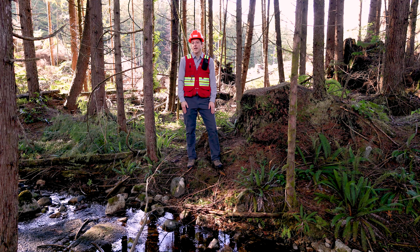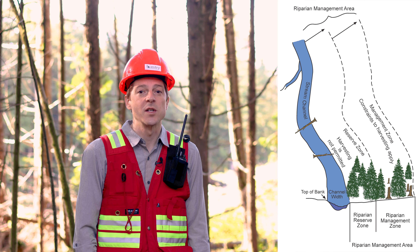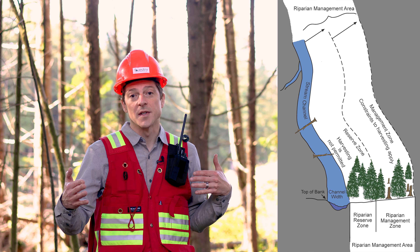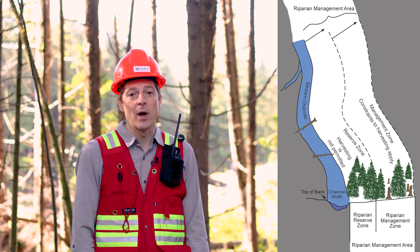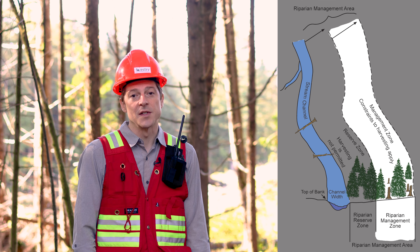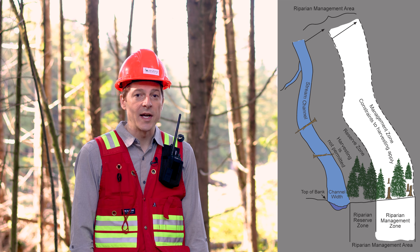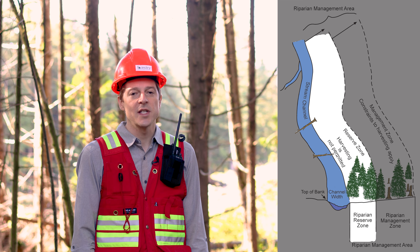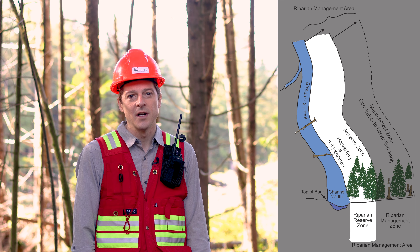In British Columbia there are regulations that govern forest management operations near riparian areas, and there's a bit of nomenclature that goes along with this. First is the riparian management area, or RMA, which is basically the area where regulations apply in relation to the riparian zone. A riparian management area can have two components. A riparian management zone, or just management zone, is an area where operations like harvesting are allowed but there may be some specific constraints on what is allowed. And then there's also the riparian reserve zone, or reserve zone, where generally speaking no harvesting is allowed, although there may be some exceptions for safety and other considerations.